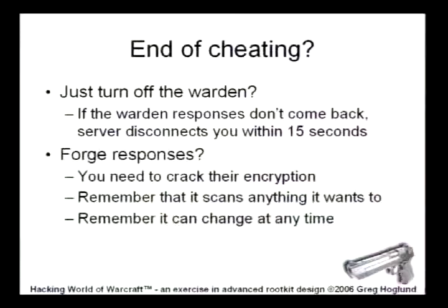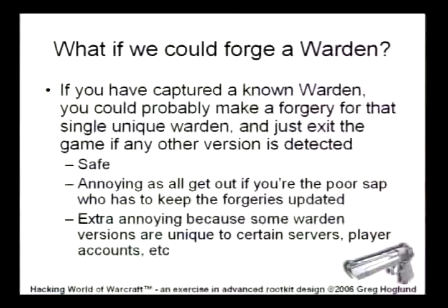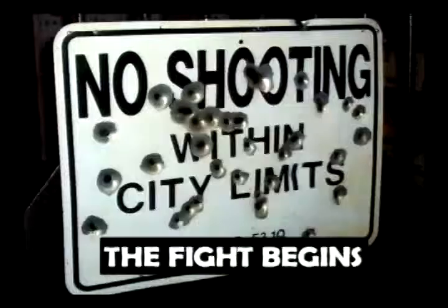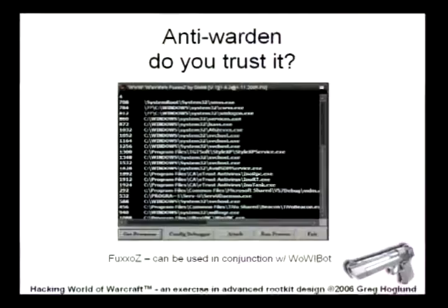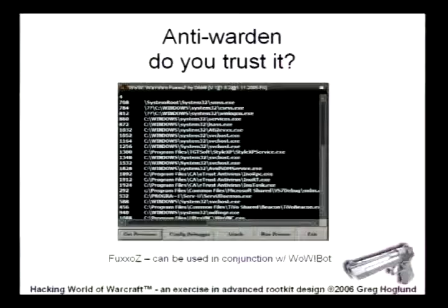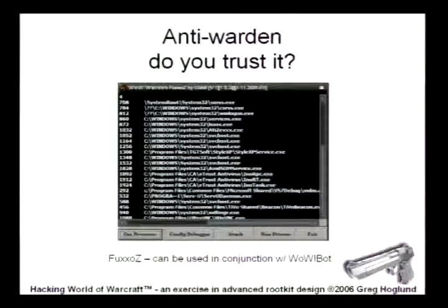If we had captured a known Warden, we could probably forge a single Warden, but we'd also have to have an additional routine that detects if the Warden changes, and then you'd just disconnect if you have a changed Warden. You don't want to be the poor sap who has to keep up with all those new Wardens. There are programs that you can download that theoretically say they can get around the Warden — but do you have any idea what it does? No. Do you trust it? Do you trust your character that you've been working on for eight months to this little program? I don't think so.